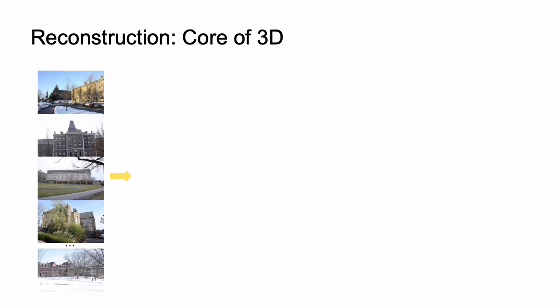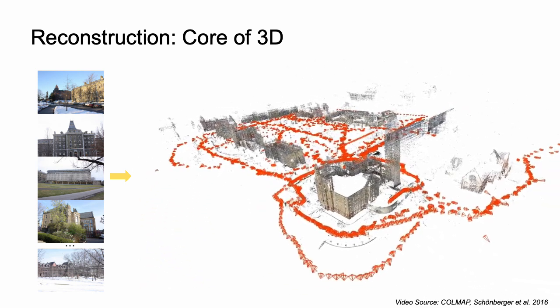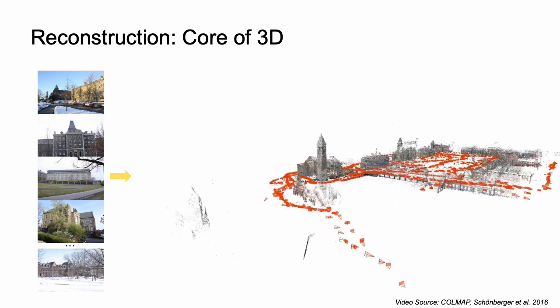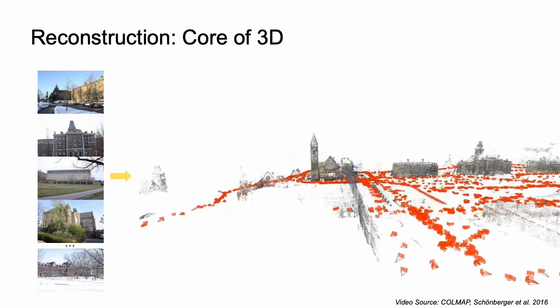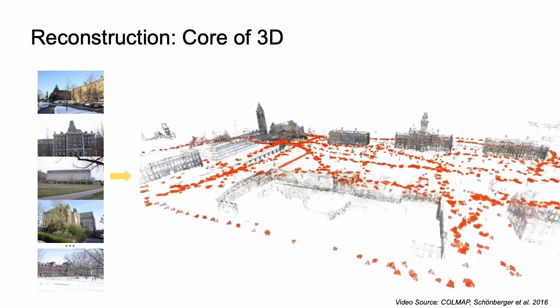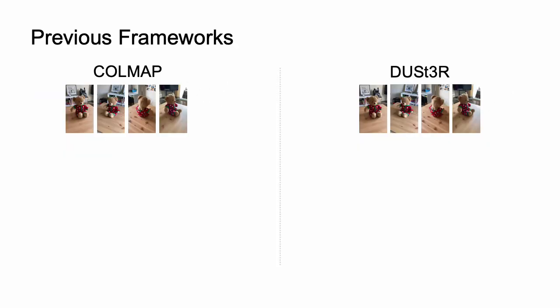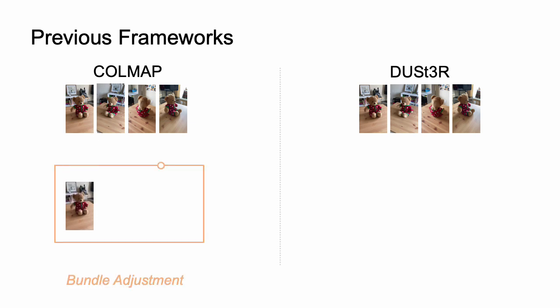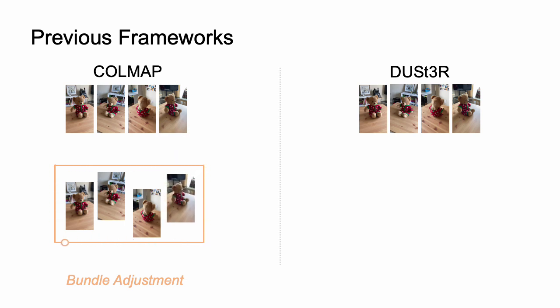Reconstruction is central to 3D geometry and has been a key research problem for over 50 years. It aims to recover a point cloud and camera poses from several unconstrained images. Past reconstruction methods often rely on test-time optimization. For example, the classical framework COLMAP uses iterative bundle adjustment, gradually registering images into an optimization problem. Once a new image is registered, bundle adjustment will be conducted. We also have a recent deep framework, DUSt3R.